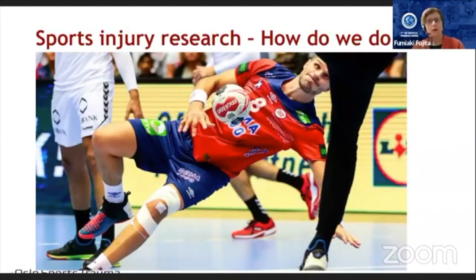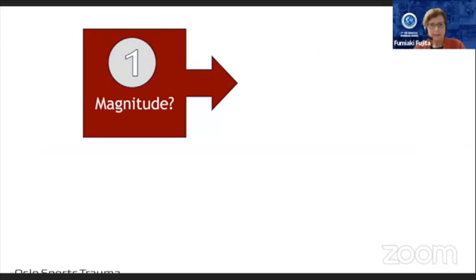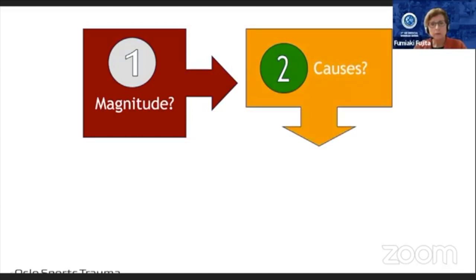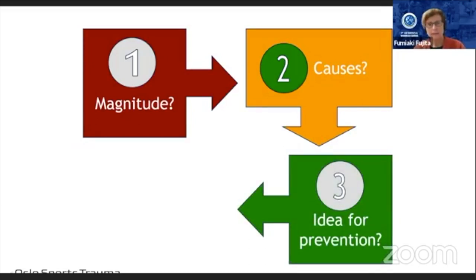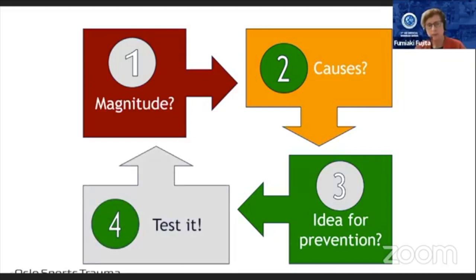How do we approach sports injury research? First we need to know the magnitude of the problem — for ACL injuries, how many handball players rupture their ACL every season. When we have those numbers we need to know the causes: why do they happen and what are the risk factors? Based on that knowledge we develop an idea of how to prevent the injury, then we test those exercises and count the number of injuries again. That is the normal framework for this research.